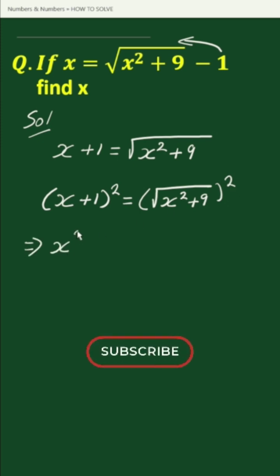This equals x squared plus 2x plus 1 equals x squared plus 9. Here, x squared will be subtracted by x squared.